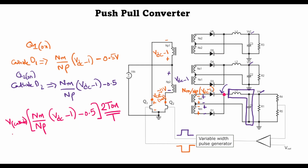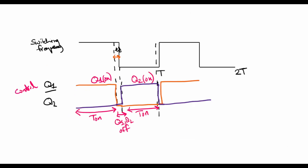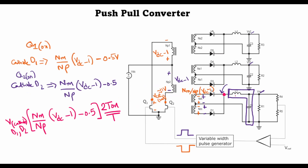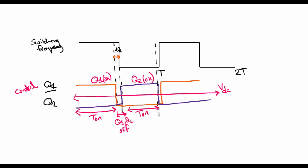The voltage at the cathodes of D1 and D2 is followed by an LC filter. As we already saw from the lecture on the buck converter, the LC filter averages out this square wave and gives an average output voltage. The design for inductor L1 and capacitor C1 proceeds just like we did for the buck converter, because the input is quite similar, with the only difference that there are two pulses per period instead of the one pulse we saw for the buck converter.